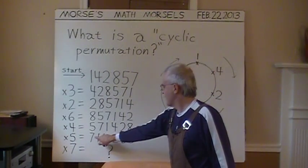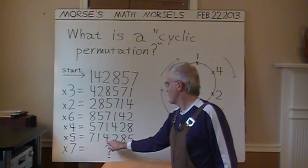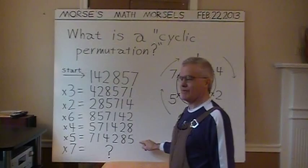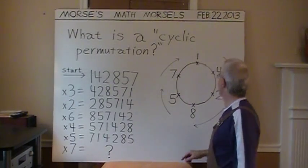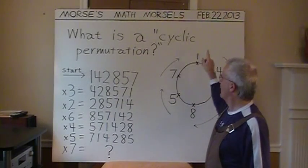And imagine that this seven were moved around to the right. We would have our original number, 142857, again. So, there are cyclic permutations of 142857.